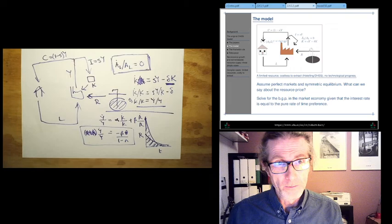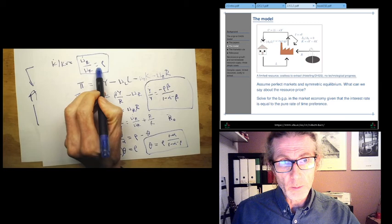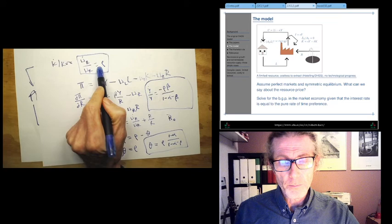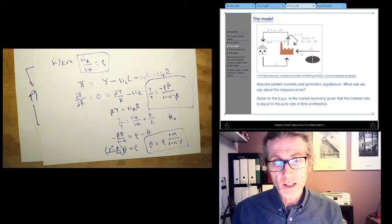Furthermore, one of the sort of key sort of unbreakable predictions of the model is this: that resource prices should go up steeply right at the interest rate, which is typically, the last 10 years have been exceptional, but prior to that like 5% or something. You'd think 5% a year. In fact that's not at all what we see in reality.